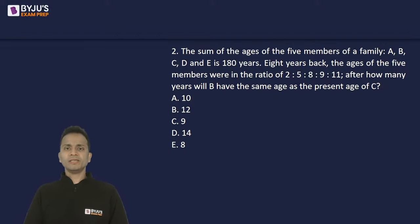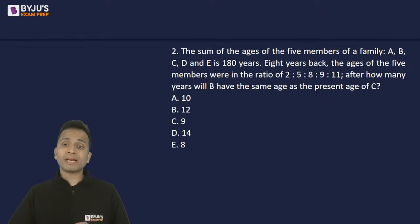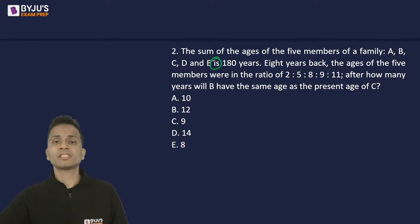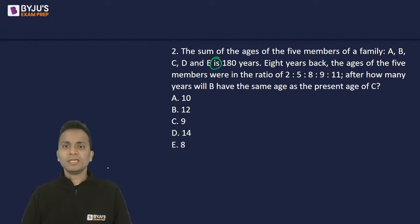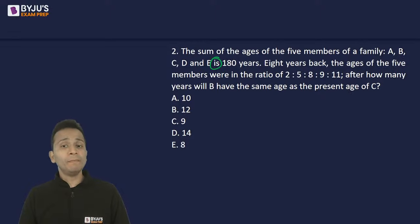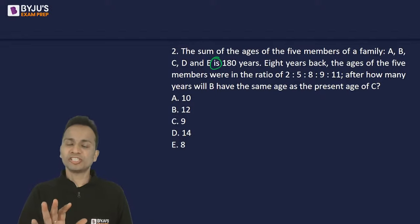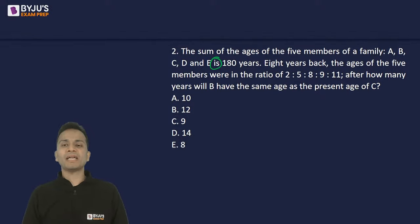Question 2: The sum of the present ages of 5 family members A, B, C, D, E is 180 years. Eight years back, their ages were in the ratio 2:5:8:9:11. After how many years will B have the same age as the present age of C? This is a slightly twisted but easy question that can be managed in about one minute.